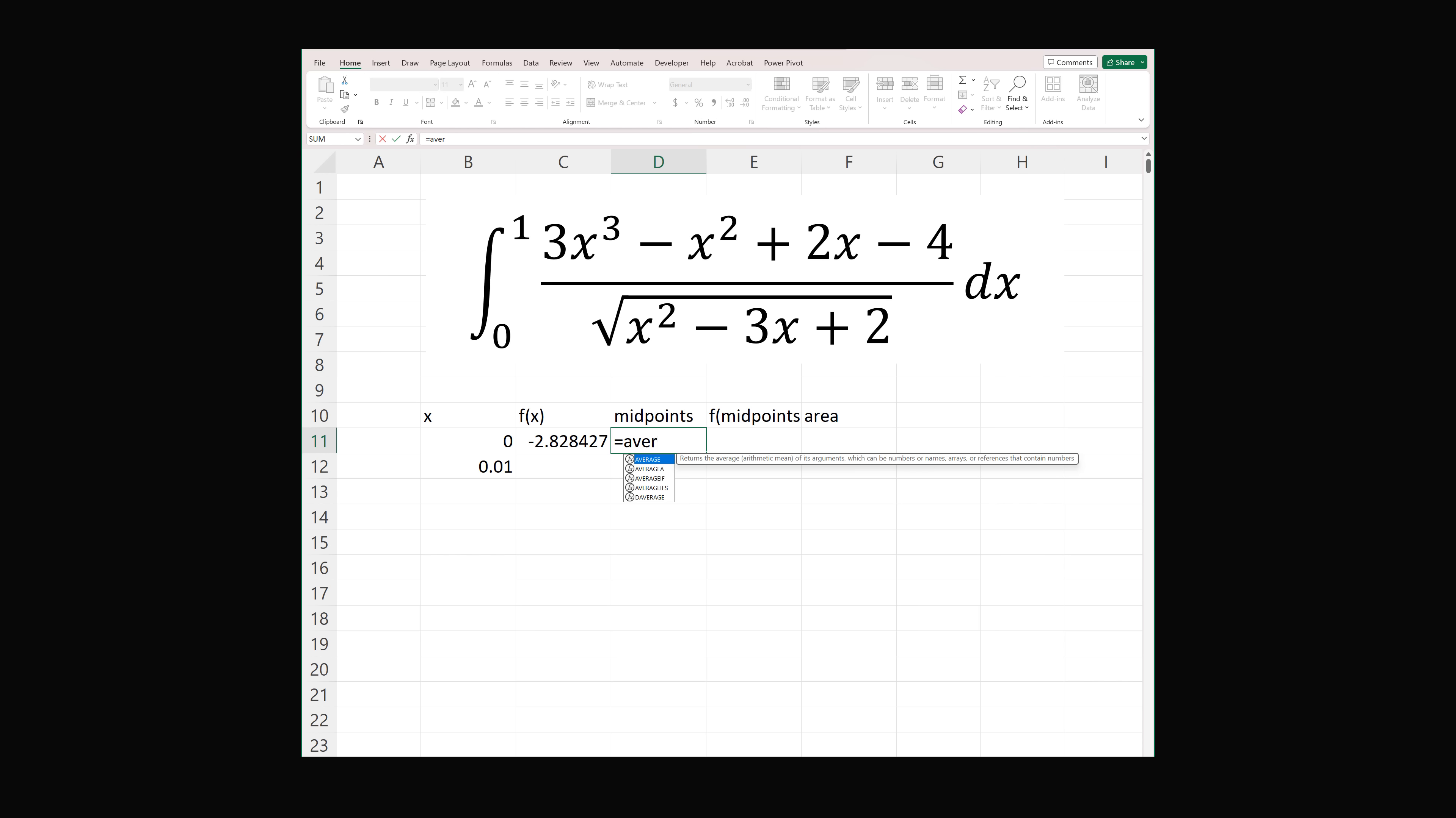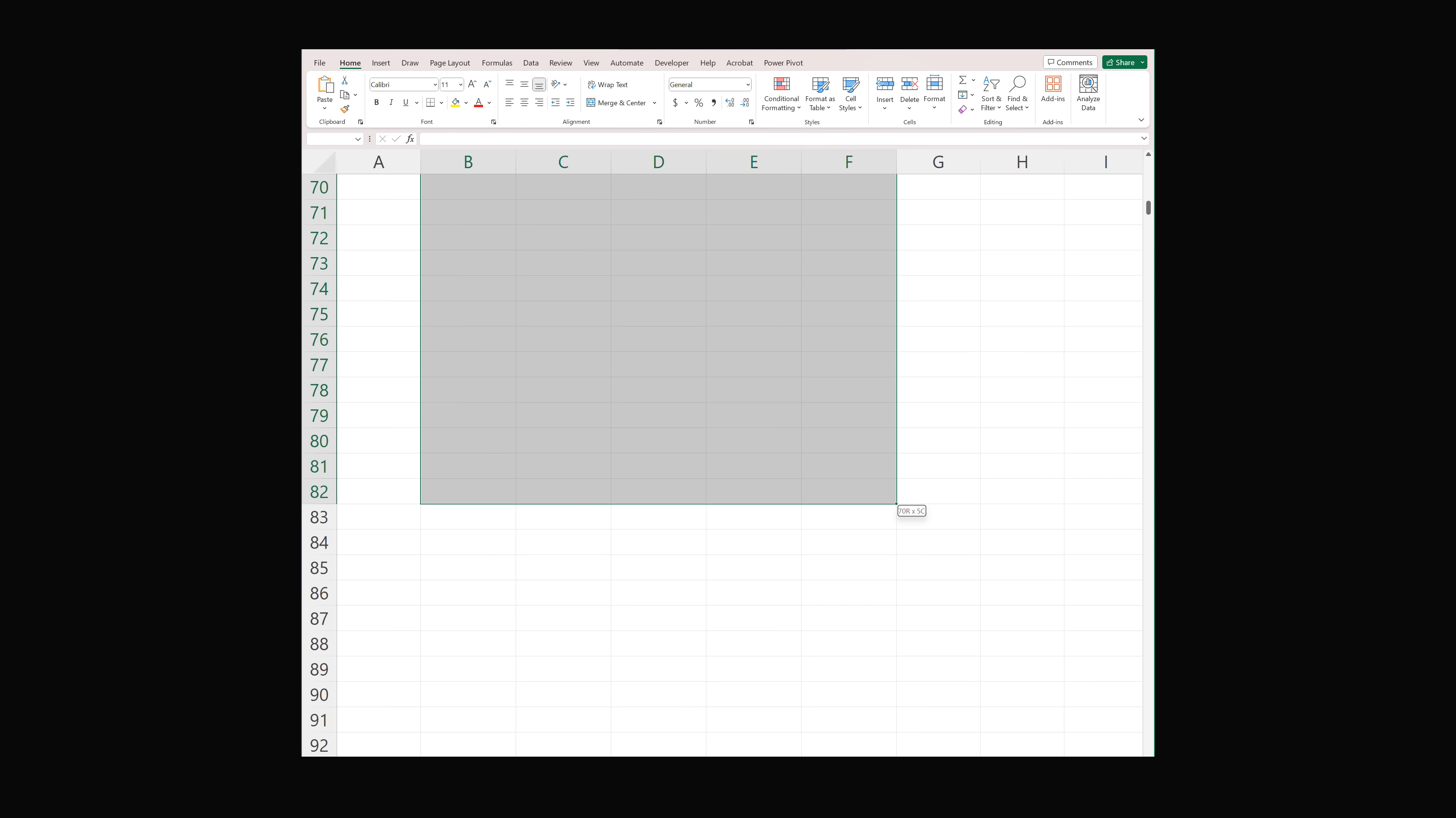Now the midpoints will be the average of these two x values. And the function at the midpoint will just be the same function evaluated at this midpoint. So the formula can just copy over. The area will be the width of this rectangle. That'll be the difference in these x values, and we want it multiplied by the function at the midpoint. So now we can just copy this formula down. And we're going to need to go all the way until x is equal to 1. So let's copy this down to about 100 rows.